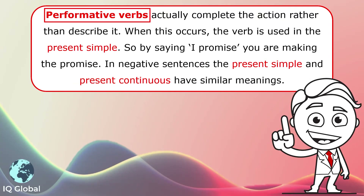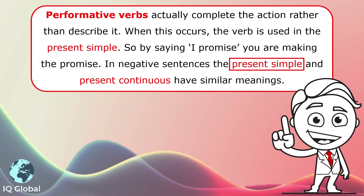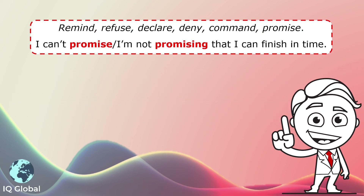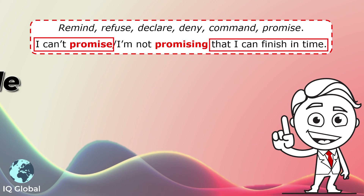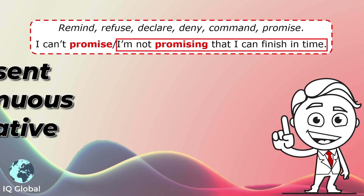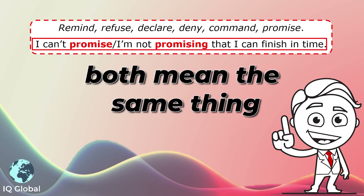And finally, performative verbs. These just complete the action rather than describe it. When this occurs, the verb is used in the present simple. So by saying 'I promise,' you are making the promise — you are saying now that you're going to do something. In negative sentences, the present simple and the present continuous have similar meanings. We can use them with words like: remind, refuse, declare, deny, command, promise. We are performing something. For example: I can't promise that I can finish in time. Both forms mean the same thing — this person is not going to promise they can finish their activity on time.